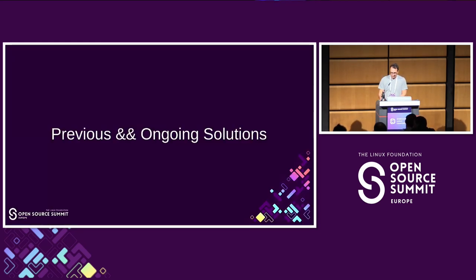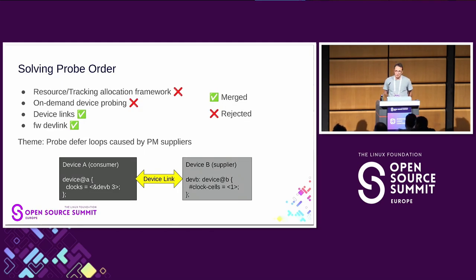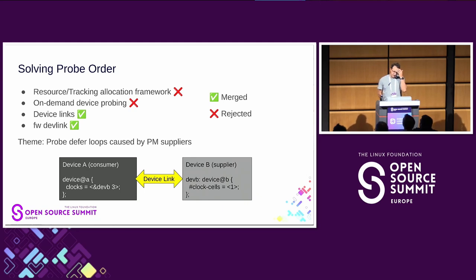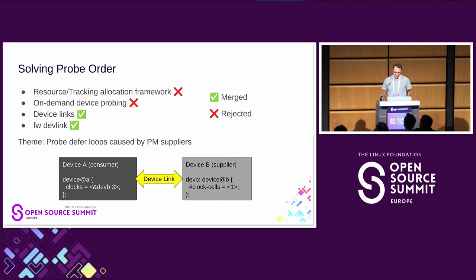What are some previous and ongoing solutions? This has been going on for probably more than a decade. The first problem identified was probe ordering, and many people have attempted to fix it. The first attempt was the resource tracking allocation framework — tracking what PM resources a driver uses and unbinding it when they go away. Then there was on-demand device probing. Finally, the device links series was merged, saying: what are the dependencies between two devices, supplier and consumer? An important thing about that patch series is that it didn't actually implement the creation of device links — it just provided the framework.